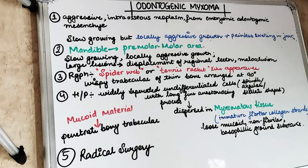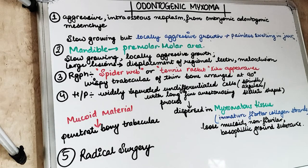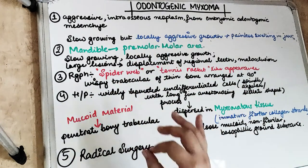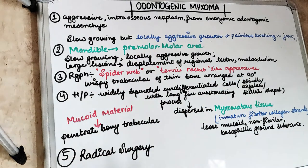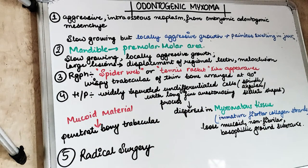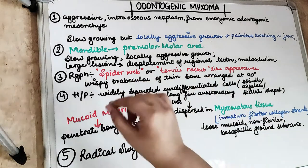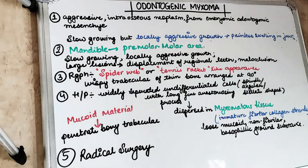Welcome back to another 5 in 5 series where we cover each topic under 5 headings in 5 minutes. Today's topic is odontogenic myxoma. Before we get started, make sure to subscribe to our channel and click on the bell icon so that you don't miss any of our future notifications.